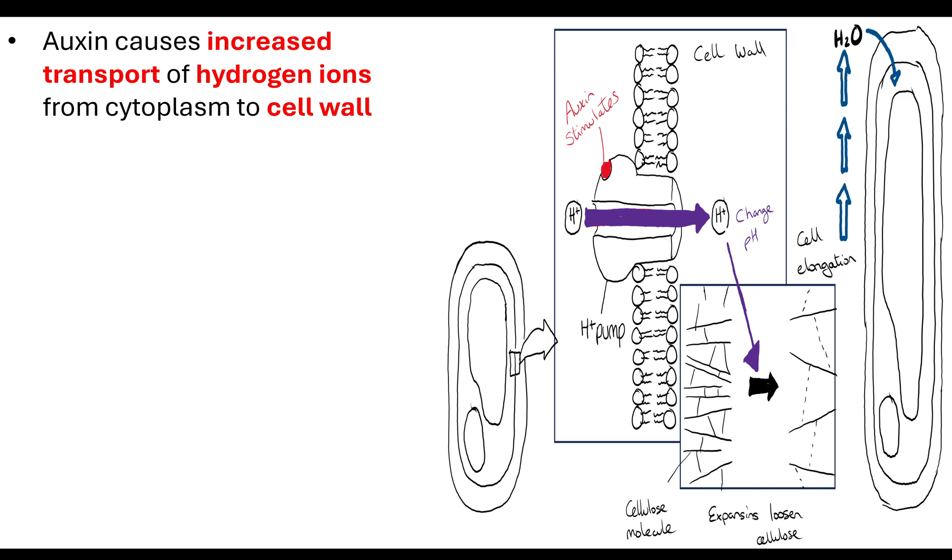Auxin is a hormone released by these apical meristem cells at the tip of the shoot and root. As the auxin diffuses to cells just below where it's being produced, it causes increased transport of hydrogen ions from cytoplasm to cell wall.